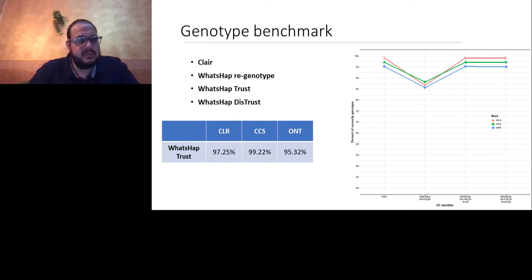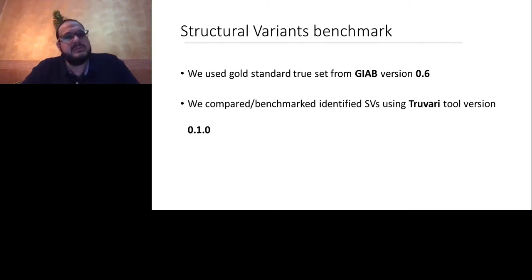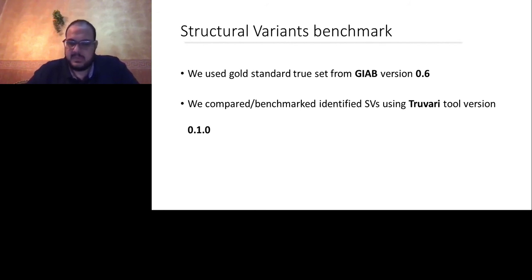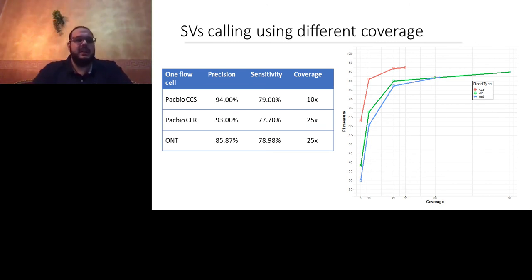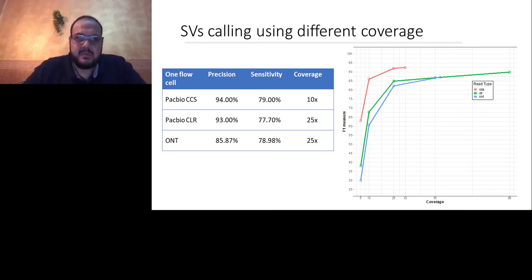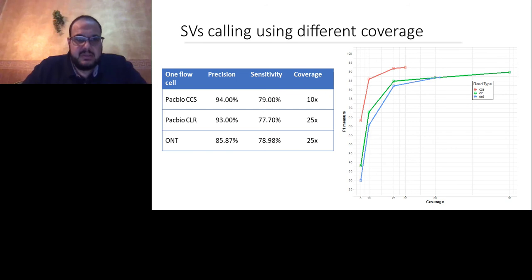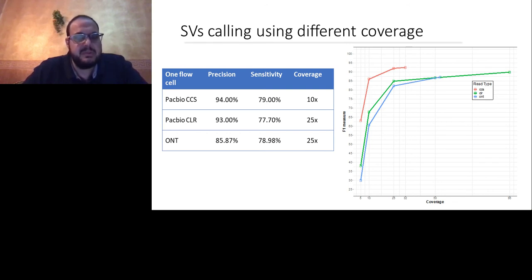Next we benchmarked structural variants using the GIAB truth set and Truvari for comparison. For one flow cell, we achieved high precision: 94% for CCS, 93% for CLR, and 85% for Oxford Nanopore, along with high sensitivity. From the graph comparing coverage on the x-axis with F-measure on the y-axis, by increasing coverage we can reach more than 92% F-measure for CCS data, and around 91-92% for both Oxford Nanopore and CLR.